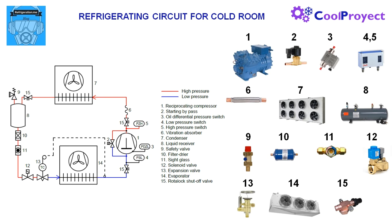In number 12 we have the solenoid valve, used to shut off liquid feed to the evaporator when the thermostat orders. The compressor will continue suctioning and gathering vapor from the evaporator, and finally the compressor will stop by the order of the low pressure switch. Emptying the evaporator this way is beneficial for the defrost operation.